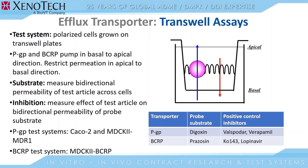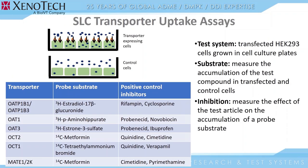The test system used also depends on what transporter is being evaluated. When looking at PGP, we either use CACO2 or MDCK2 cells. For the BCRP transporter, we use MDCK2 cells as the test system. When looking at SLC or uptake transporters, we use our uptake assay design. In this design, the test system used are HEK293 cells grown in cell culture plates. For substrate assays, we measure the accumulation of the test article in transfected and control cells. For inhibition assays, we measure the effect of the test article on the accumulation of a known probe substrate for that given transporter. All experiments are conducted with the appropriate known probe substrates and known positive control inhibitors.